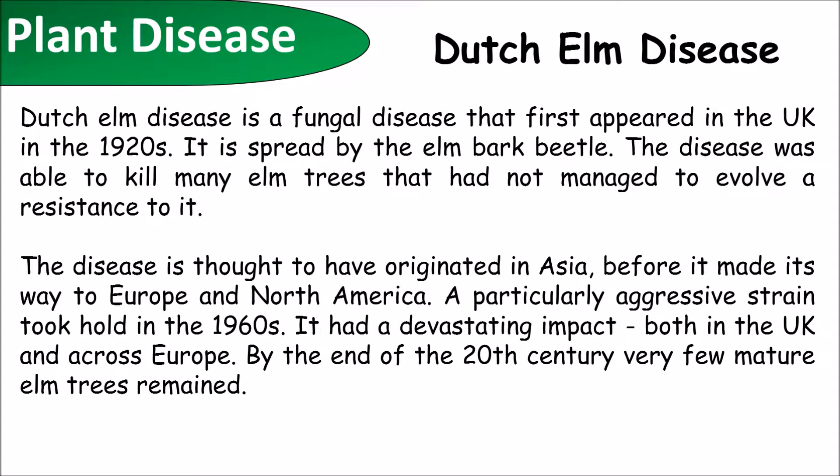Dutch Elm disease is a fungal disease that first appeared in the UK in the 1920s. It is spread by the elm bark beetle. The disease was able to kill many elm trees that had not managed to evolve to resist it. It is thought to have originated in Asia before making its way to Europe and North America. A particularly aggressive strain took hold in the 1960s, having a devastating impact both in the UK and across Europe.